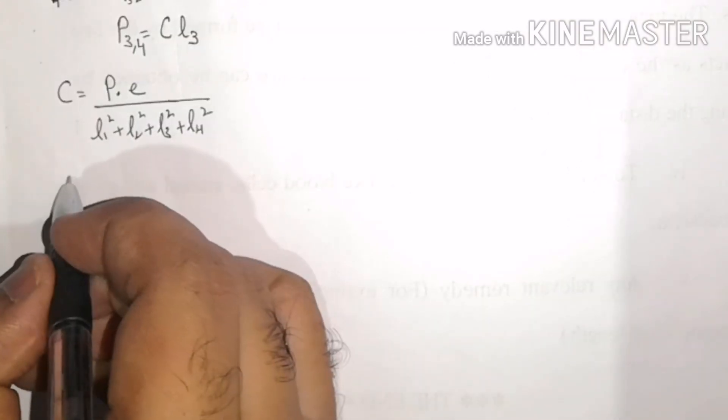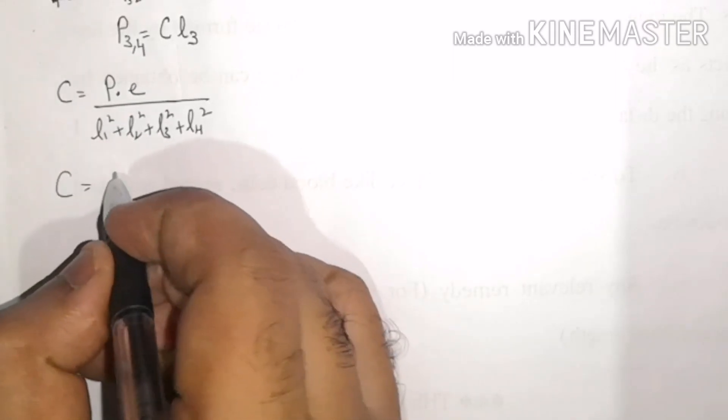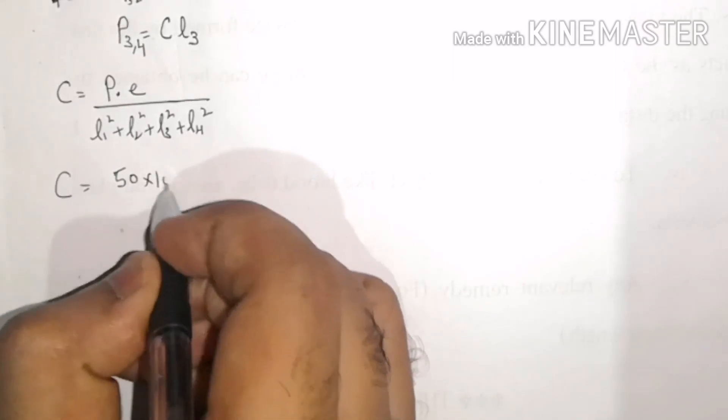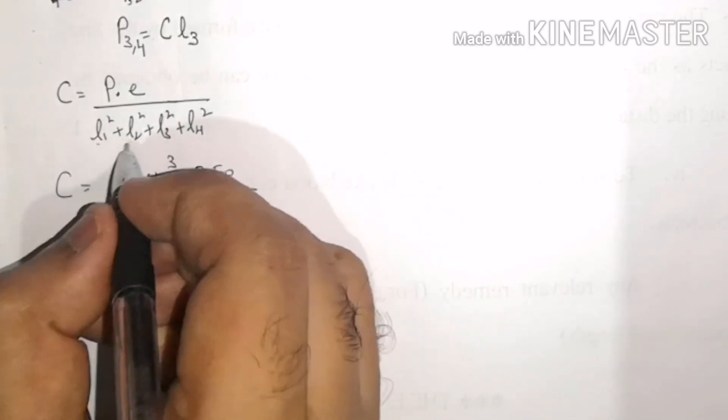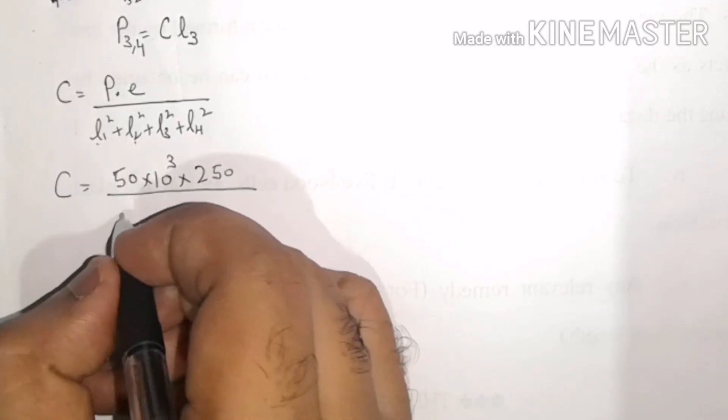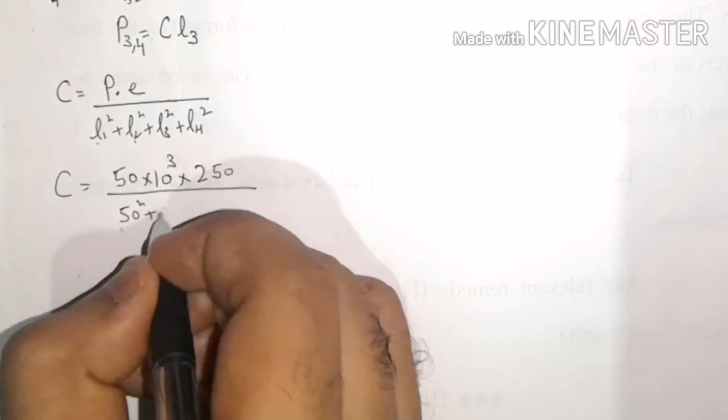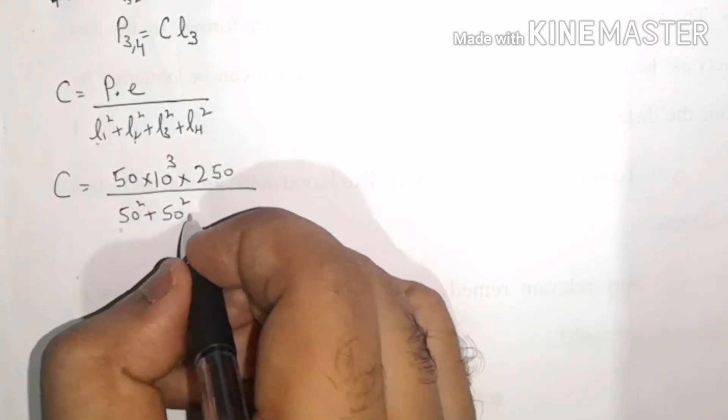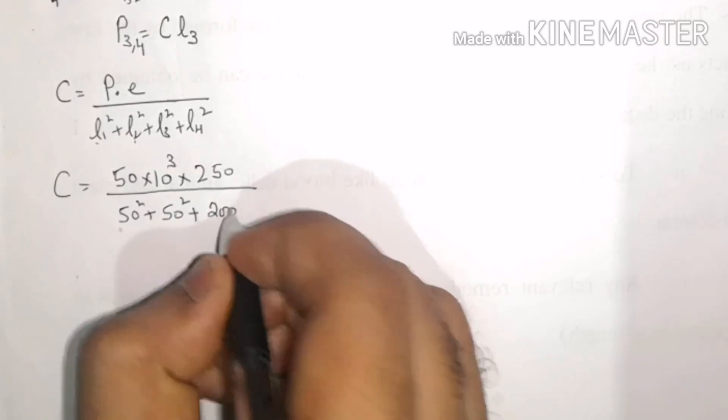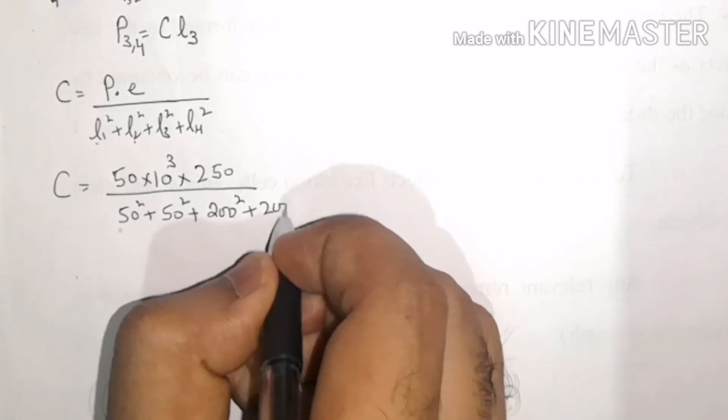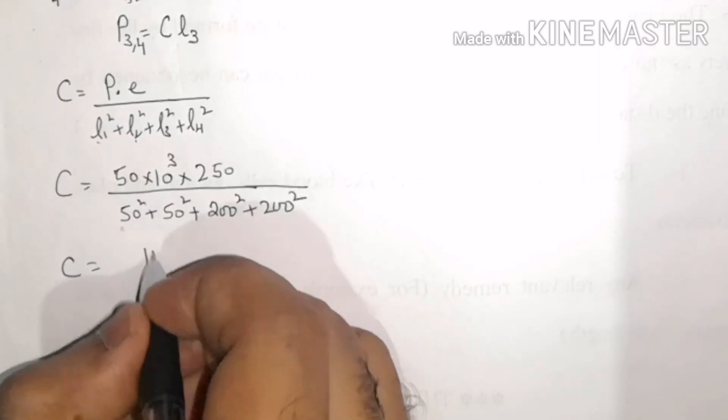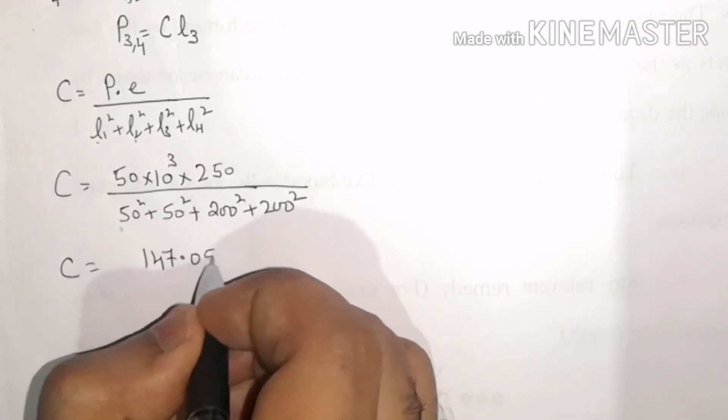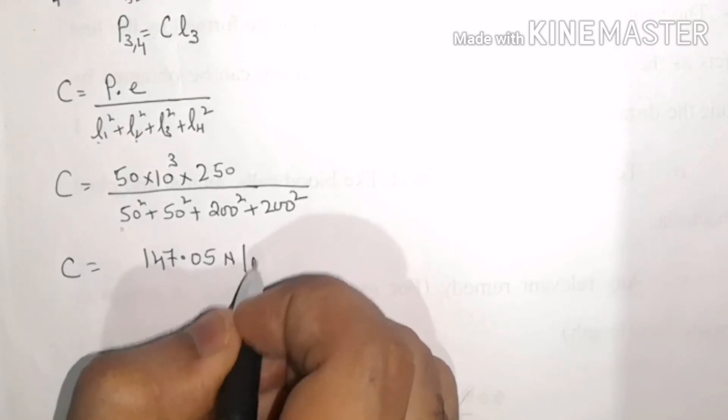Substituting the values: C = P × E / (L1² + L2² + L3² + L4²) = (50 × 10³ × 250) / (50² + 50² + 200² + 200²). On solving this, I get the value of C as 147.05 N/m.